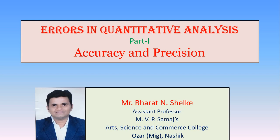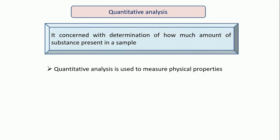What is quantitative analysis? Quantitative means how much amount of that particular substance is present — that is known as quantitative. So, in terms of analytical chemistry, how much amount of that particular substance is present in the given sample — that is called quantitative analysis. It is concerned with the determination of how much amount of substance is present in a sample.